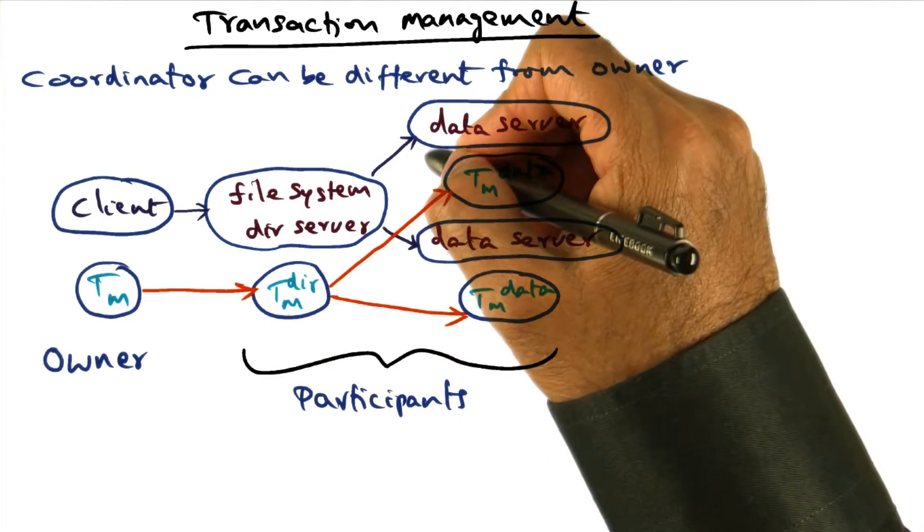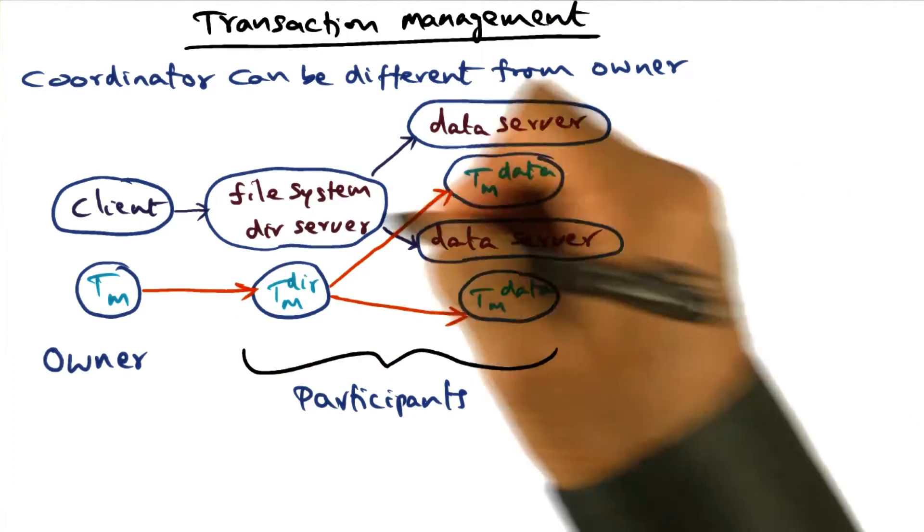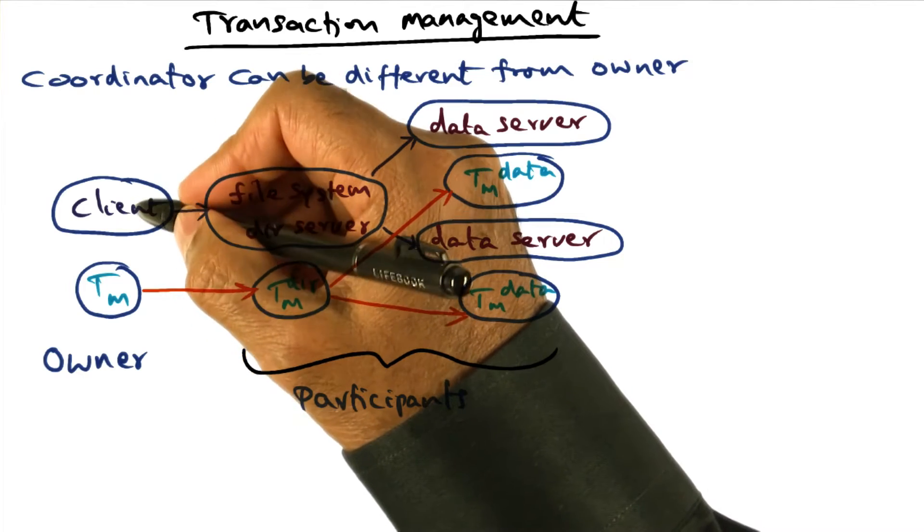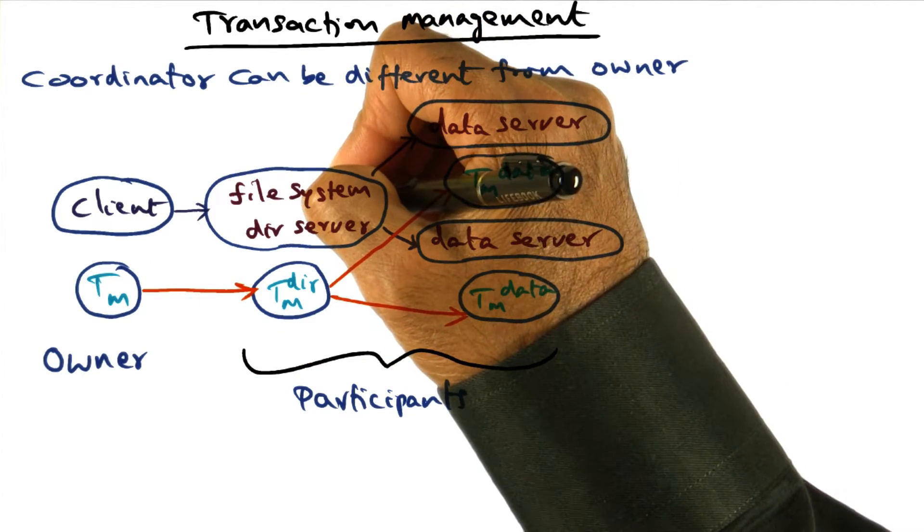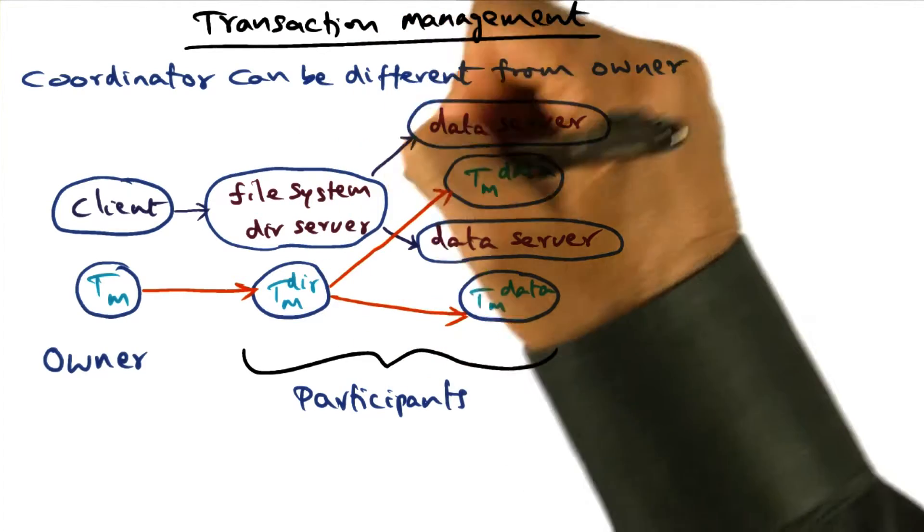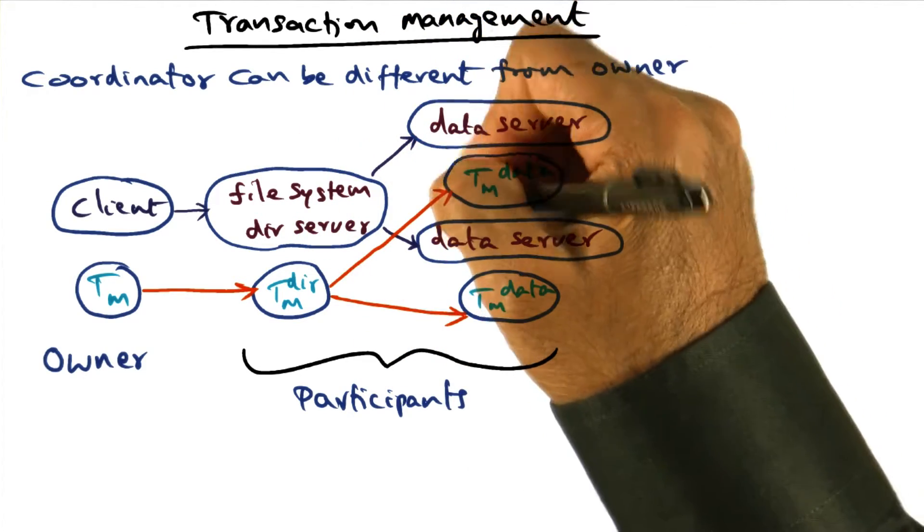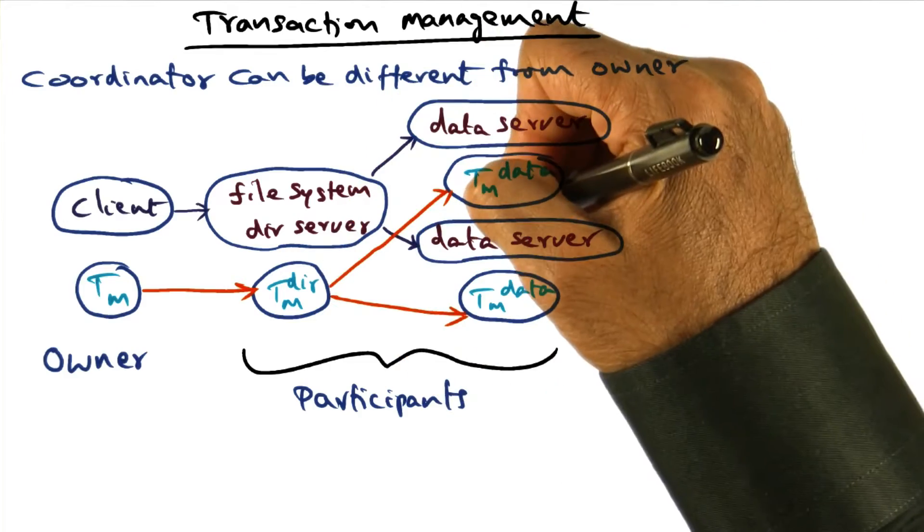Due to the client-server interactions that happen in the distributed system, I'm giving you one specific example here. A client makes a call to a file system, and the directory server of the file system makes calls to the data servers where the file is actually located.